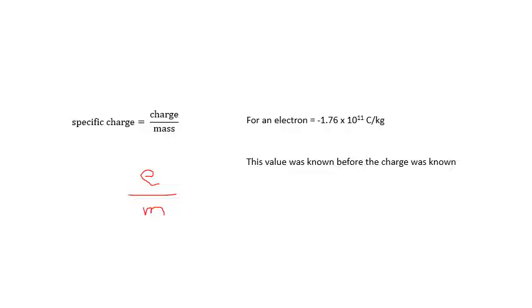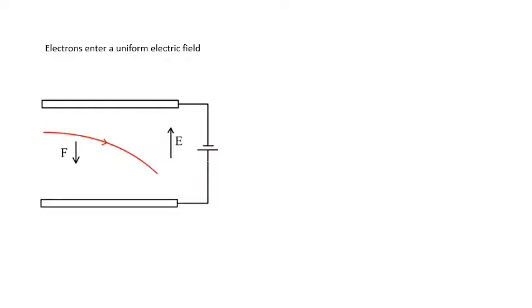We knew this value before we knew the charge on an electron. J.J. Thomson did an experiment to get a value for e over m, and it was much later that Henry Millikan did an experiment to find e. Once you knew e, you could work out the mass of the electron.